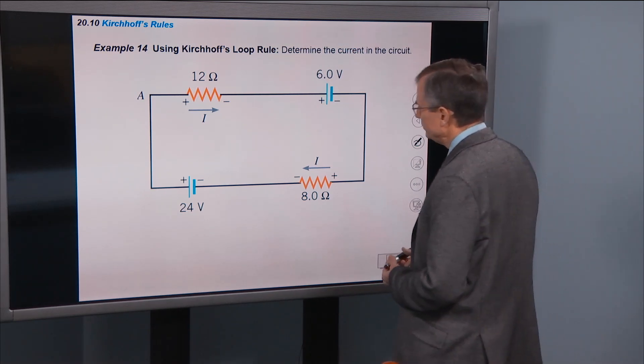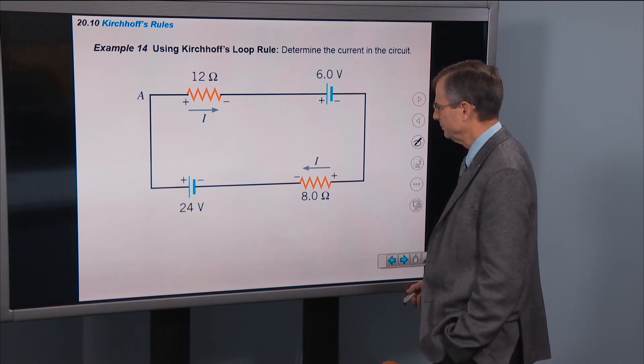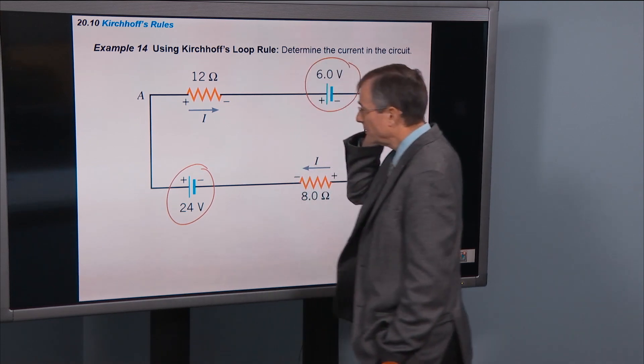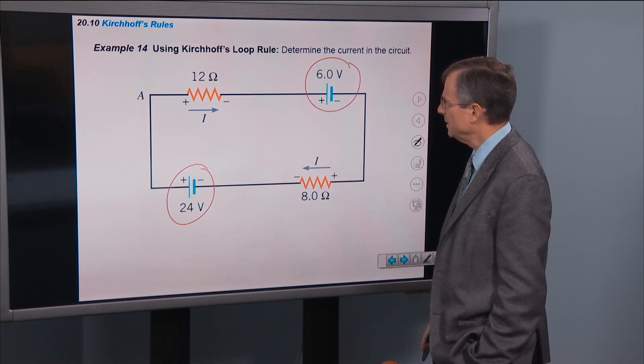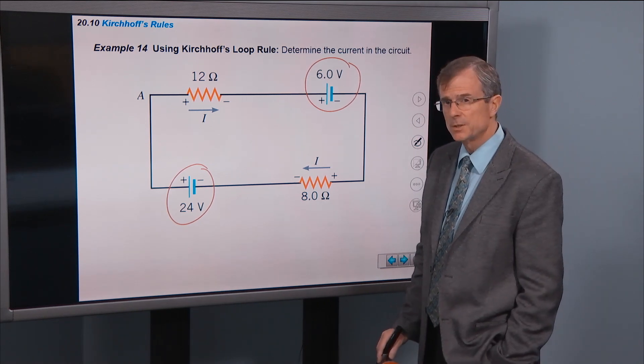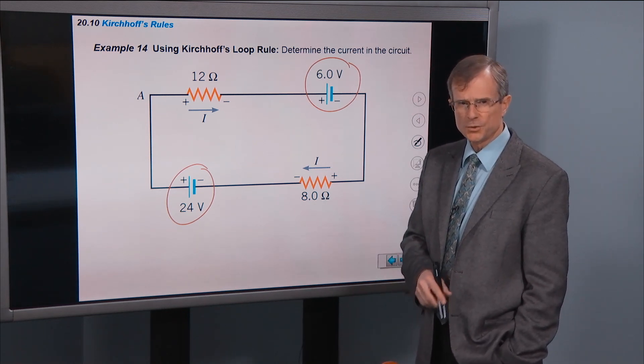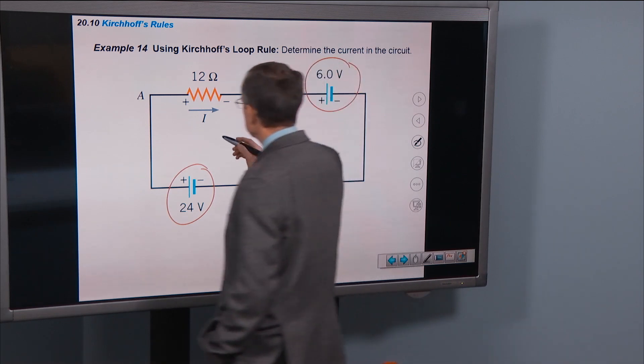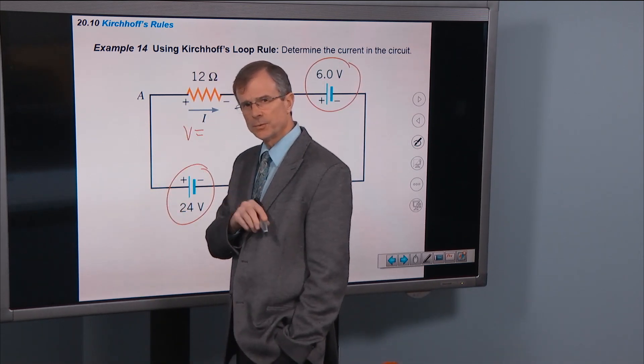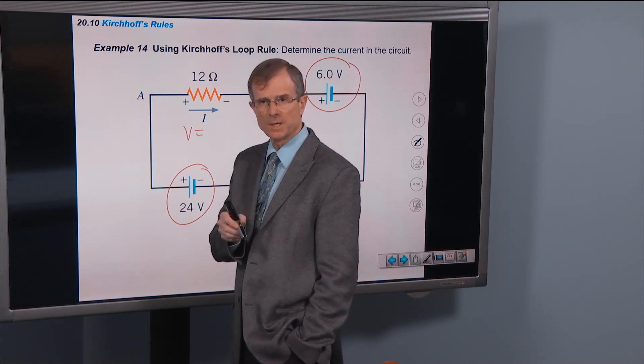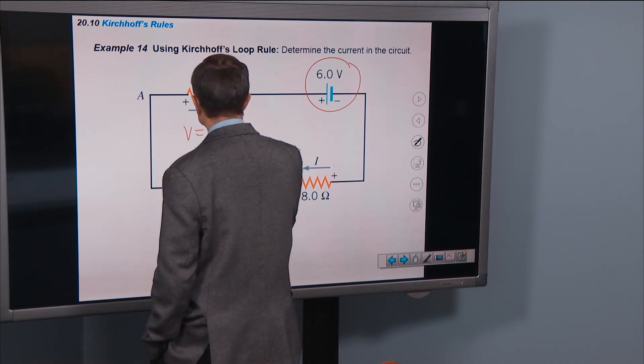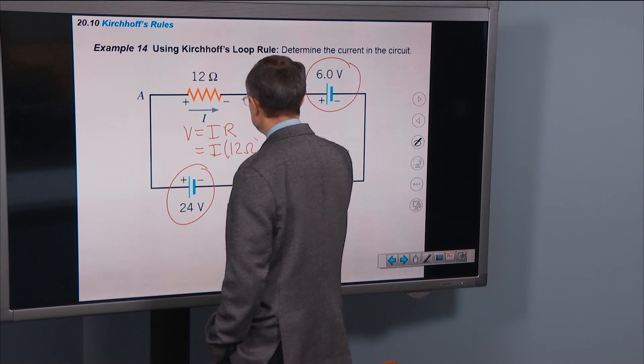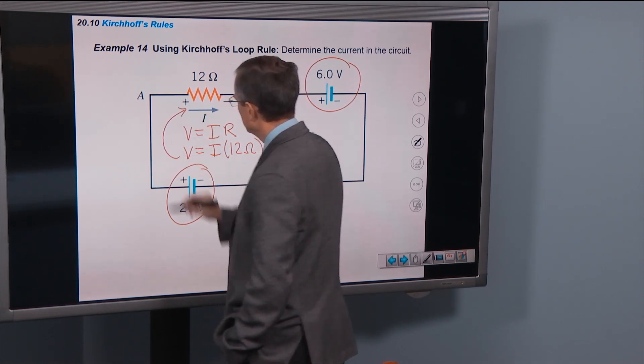Determine the current in the circuit. This is an example. Let's see if we can find the current in the circuit. I've got a battery here. I've got a battery here. And I am going to use the loop rule to try and determine the current in the circuit. Now I'm going to need the voltage drop across this resistor, but I don't know it yet. But I do know that the voltage drop across this resistor is the current through the resistor, I, times the resistance itself, R. I is whatever it is. I don't know what it is yet. But R I do know. It's 12 ohms. So that's the voltage drop across that resistor.